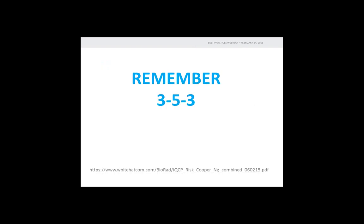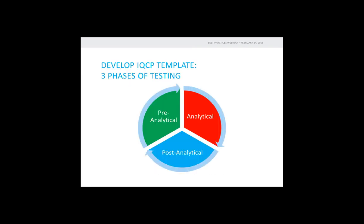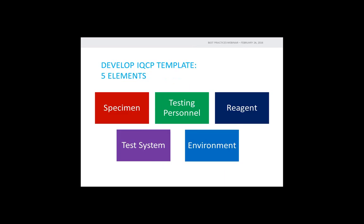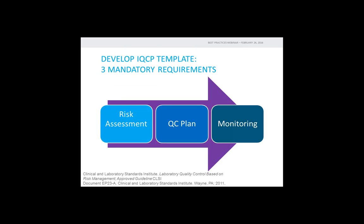To create an IQCP and keep it simple, I like to remember the 3-5-3 rule. The three phases of testing are pre-analytical, analytical, and post-analytical. The five elements include specimen quality, training and competency of testing personnel, monitoring of test reagents and the environment, and monitoring your test system including instrument calibration, maintenance, and function checks. Lastly, the three mandatory items are your risk assessment, your quality control plan with all the details, and oversight and assessment of the plan — which includes evaluation of errors as related to the three phases of testing, corrected reports, and complaints regarding testing quality.